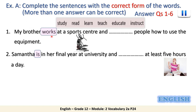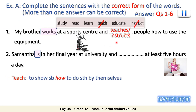Pay attention to the present simple right here. Also pay attention to the subjects because the two subjects here are in the third person singular. This is why the form of the verb will change. My brother works at a sports center and teaches — we have added ES to the verb teach. And if we use instruct, we will add only S: instructs people how to use the equipment.